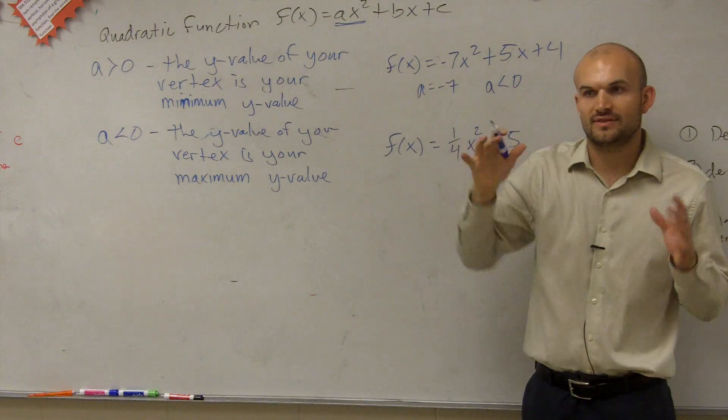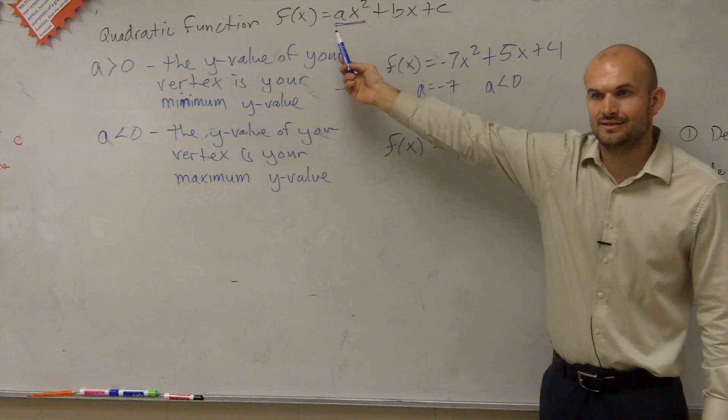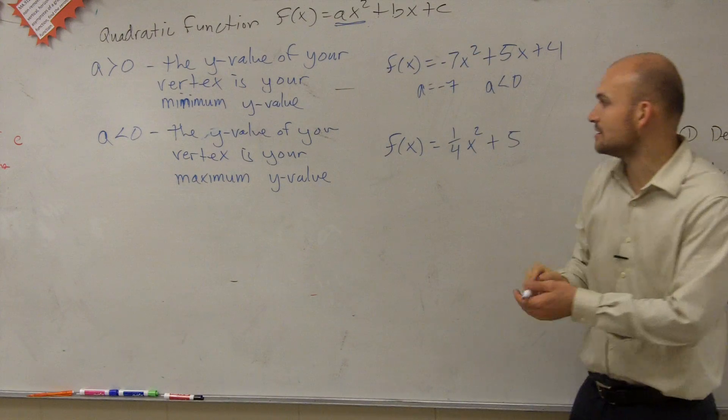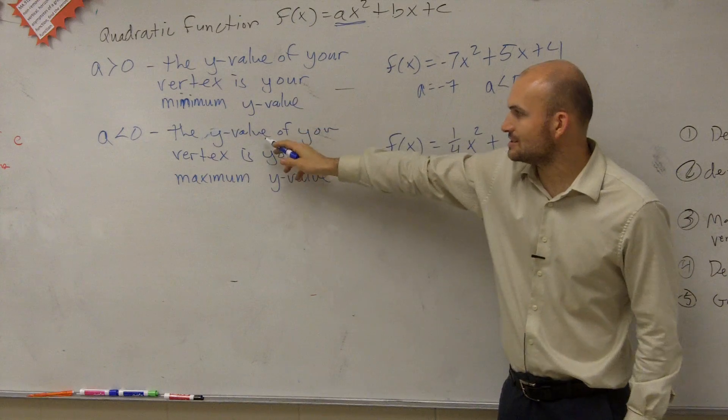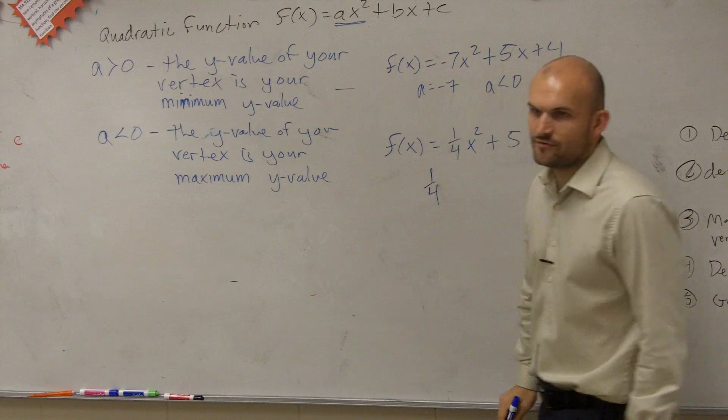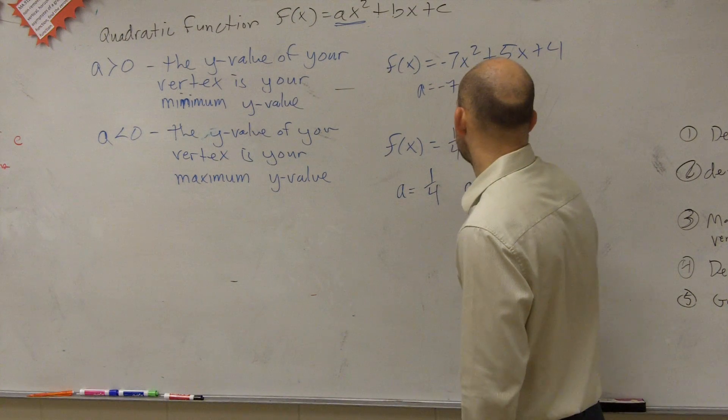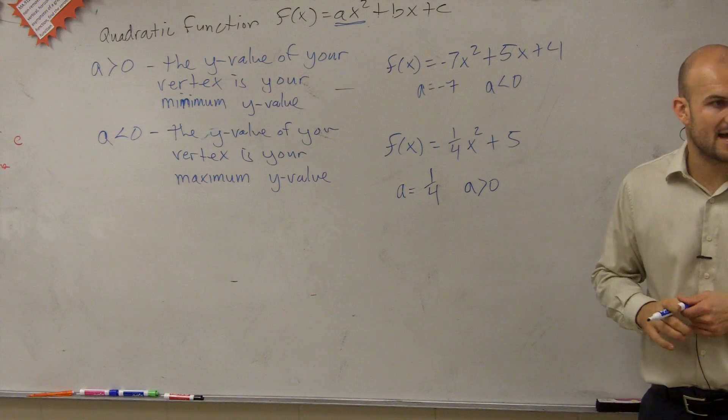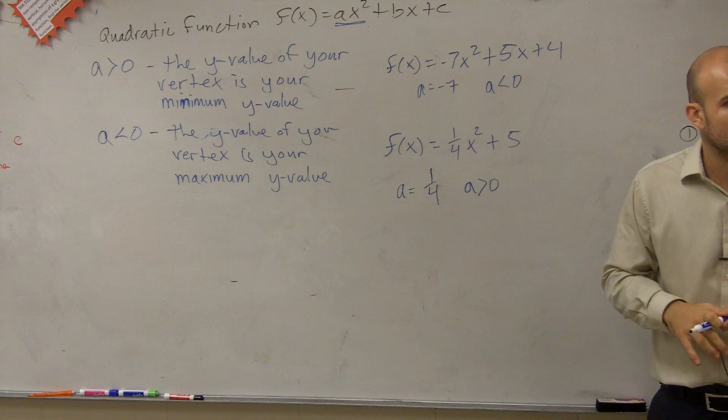When using this test, what we could call like the leading coefficient test, or if it's going to open up or down, we're only going to look at a is going to be the only one we're going to test. So we're not going to test our linear or our quadratic, because we're just going to look at a. So therefore, negative 7, since that's less than 0, we have a maximum value. Here we look at 1 fourth. Is 1 fourth greater than or less than 0? Greater than. So you could say a is greater than 0. Therefore, I know my vertex is now going to be a minimum value. I don't know what it is, we'll learn how to do that again, but I know it's going to be at least a minimum value.